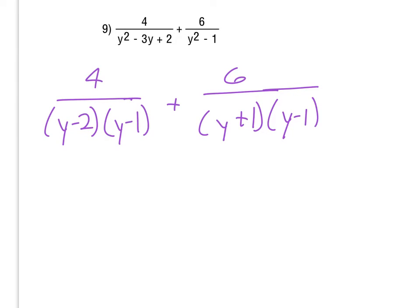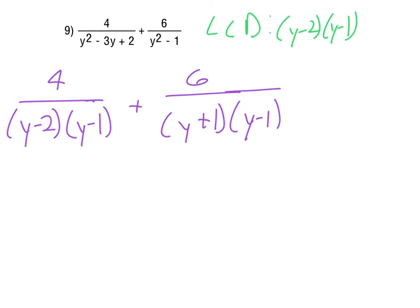So if we look at identifying the LCD here, if I take the y minus 2 and the y minus 1 from the first denominator, then all I'm missing is the y plus 1 from the second denominator. So there is our LCD.